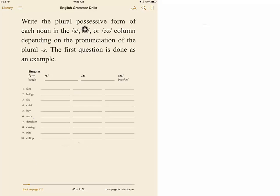So it says write the plural possessive form of each noun in the S, Z, or E-Z column, depending on the pronunciation of the plurals. The first question is done as an example. They do beach, and then the plural is beaches. Face, and so faces.